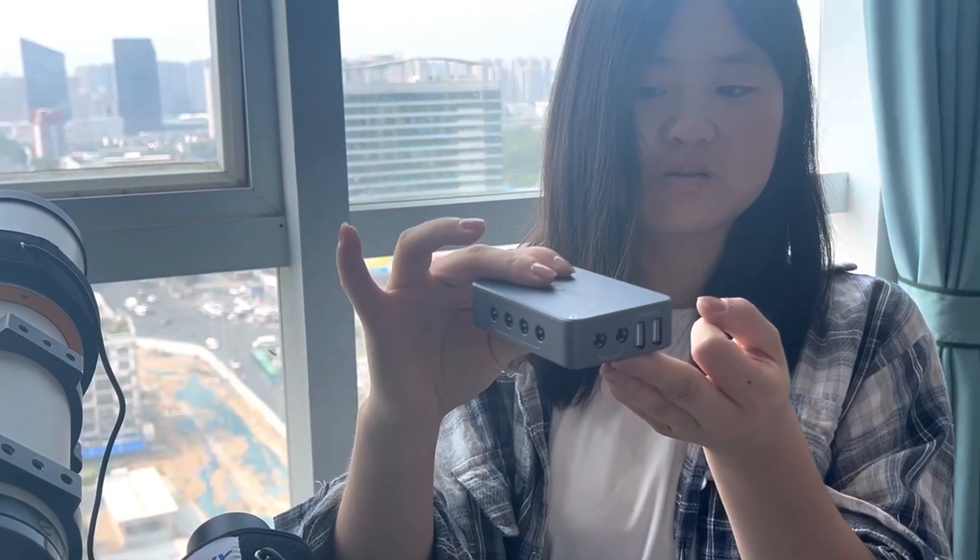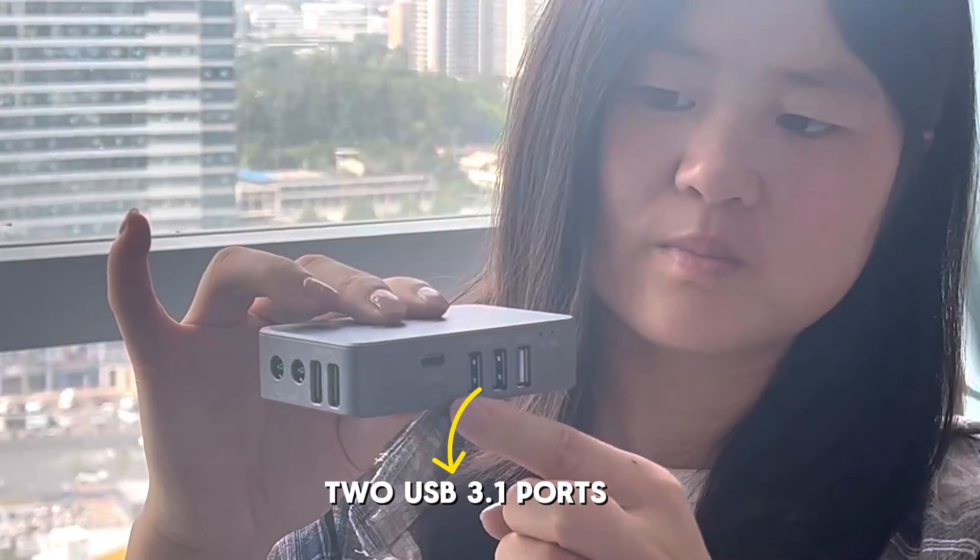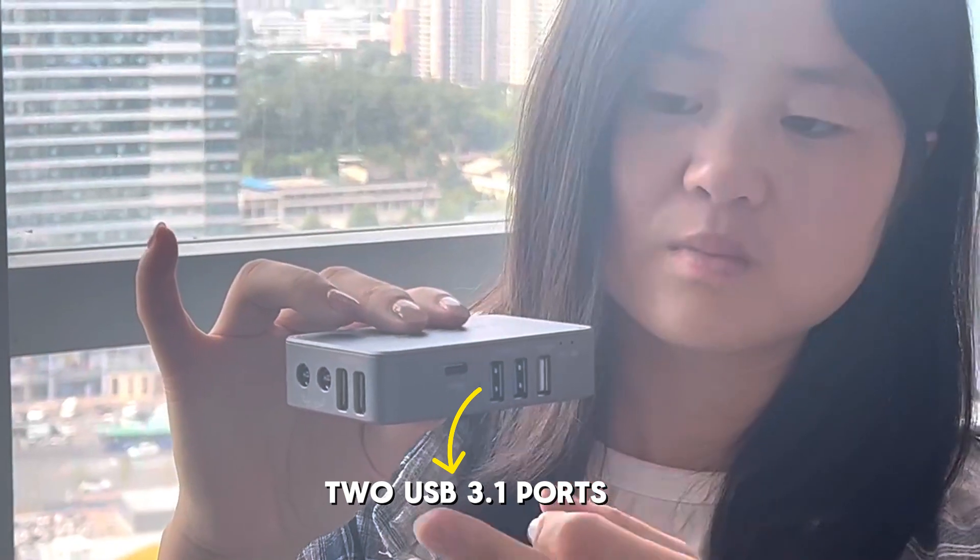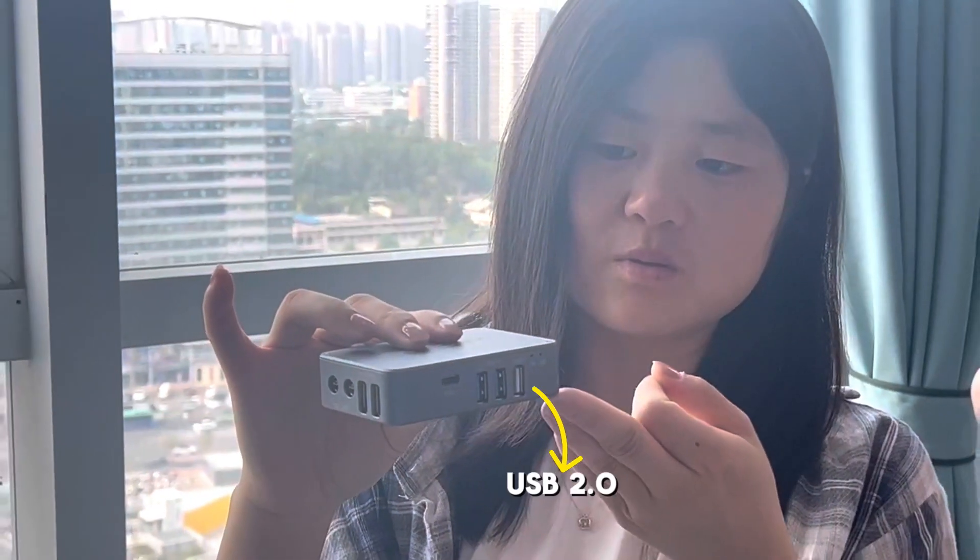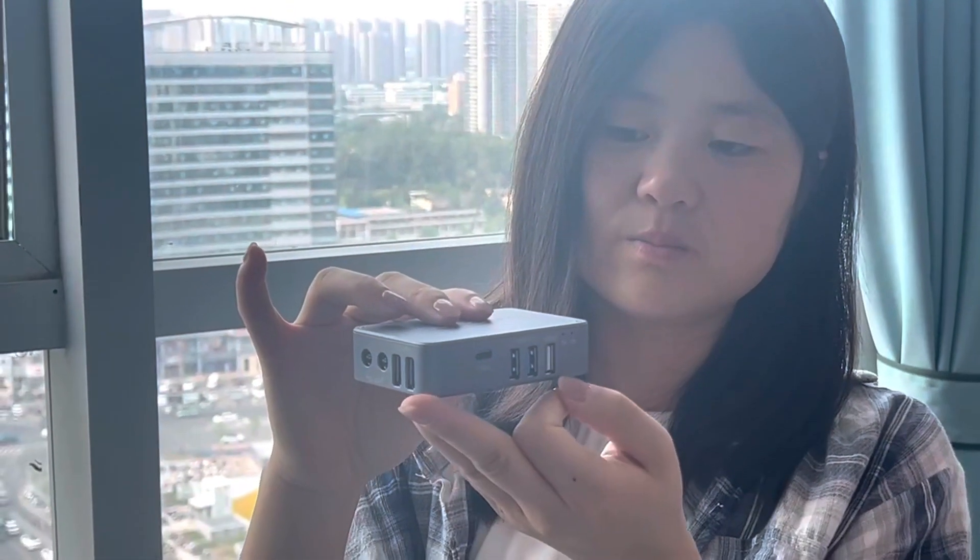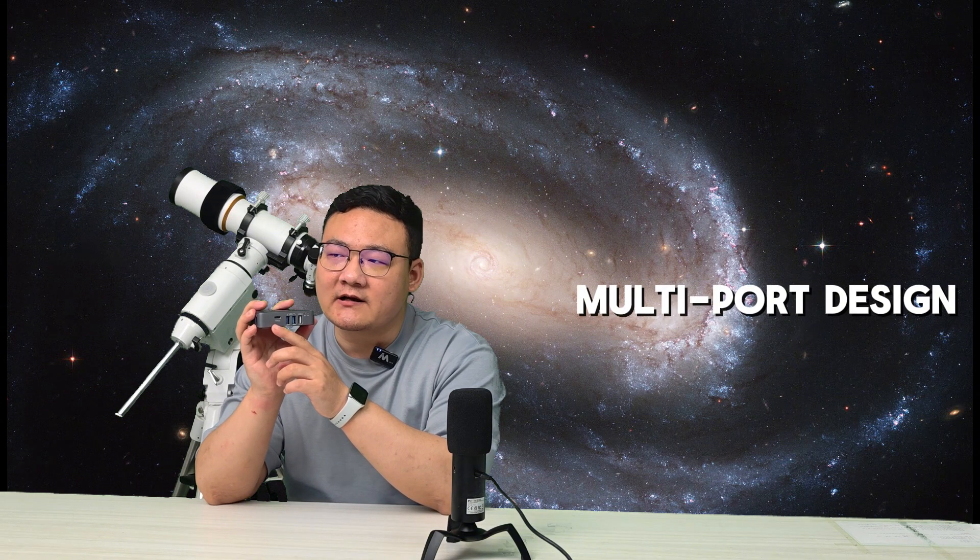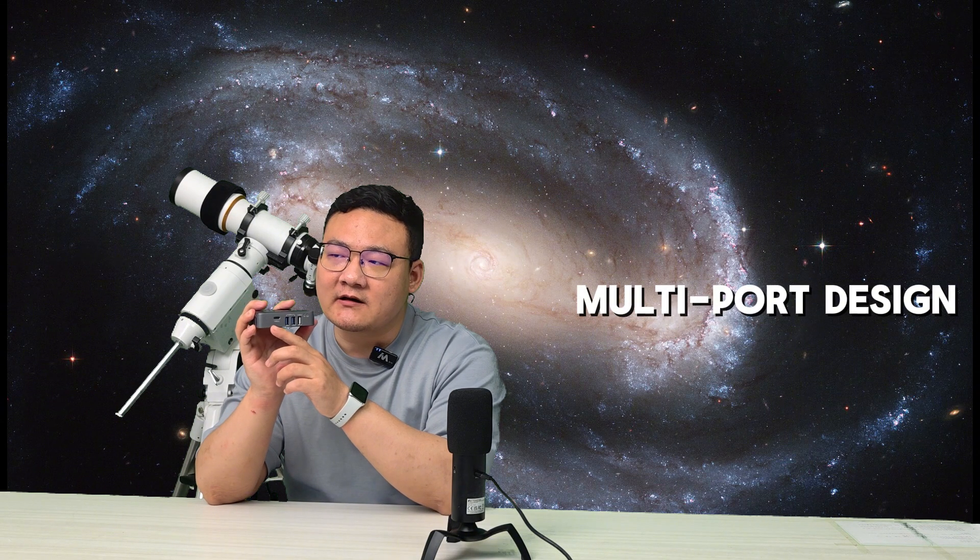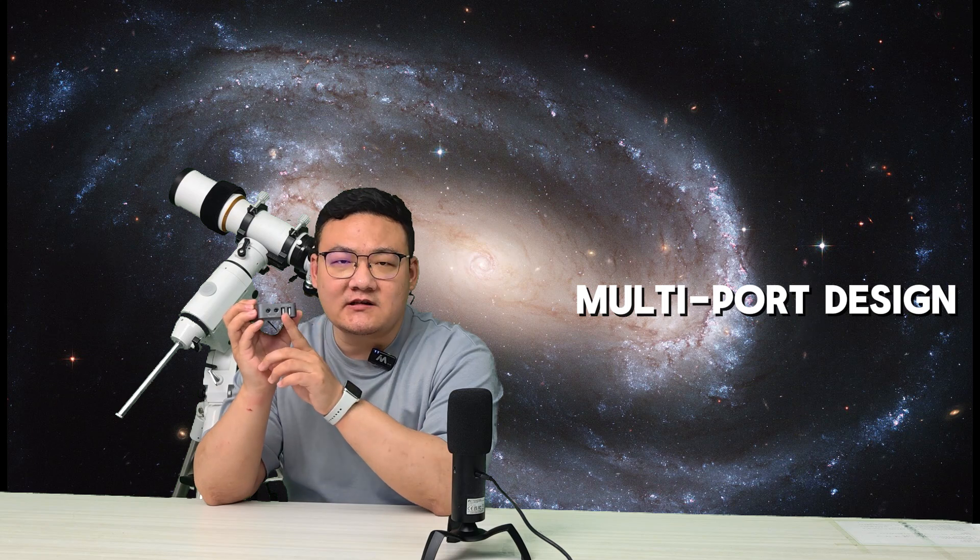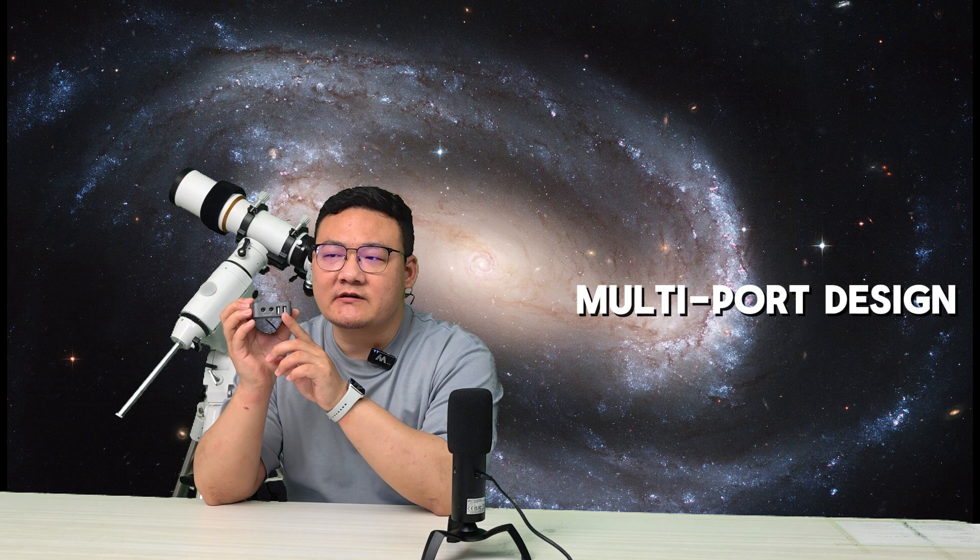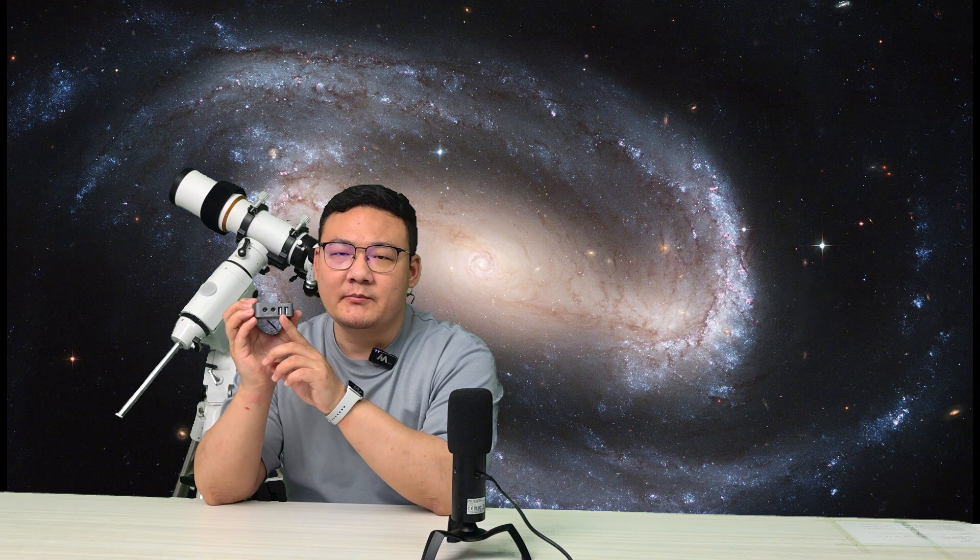On this side, there are two USB 3.1 ports for high-speed camera data transfers. You'll also find a USB 2.0 and a Type-C port suitable for connecting equipment like a recovery mount and guiding cameras. In addition, there are 5V and 8A outputs especially for powering dual heater bands.